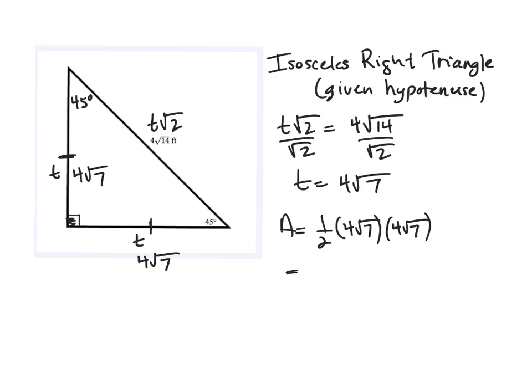And this is going to be 1 half of 16 root 49. And I know that 7 times 7 is 7 squared, and the square root of 7 squared is 7, or the square root of 49 is 7.